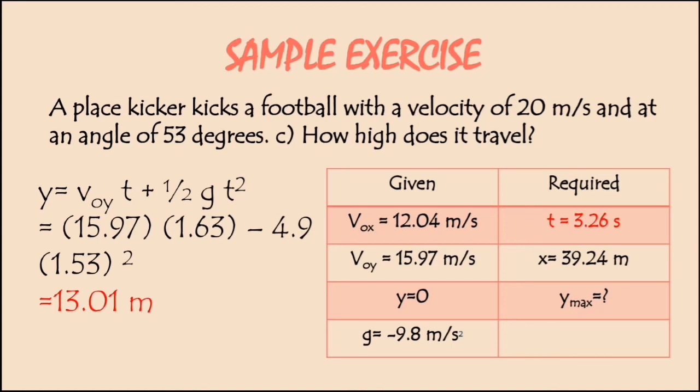Lastly, how high does it travel? We're going to use the formula of the vertical component, which is v_y t + 1/2 gt². Let's substitute the value: 15.97 for the velocity of the vertical component times time or 1.63. Why is it 1.63? Given that the time here is 3.26, it is 1.63 because it is only half projectile. We're going to have the half value of it less 4.9 times 1.63 squared. With all that value, we're going to have 13.01 meter.